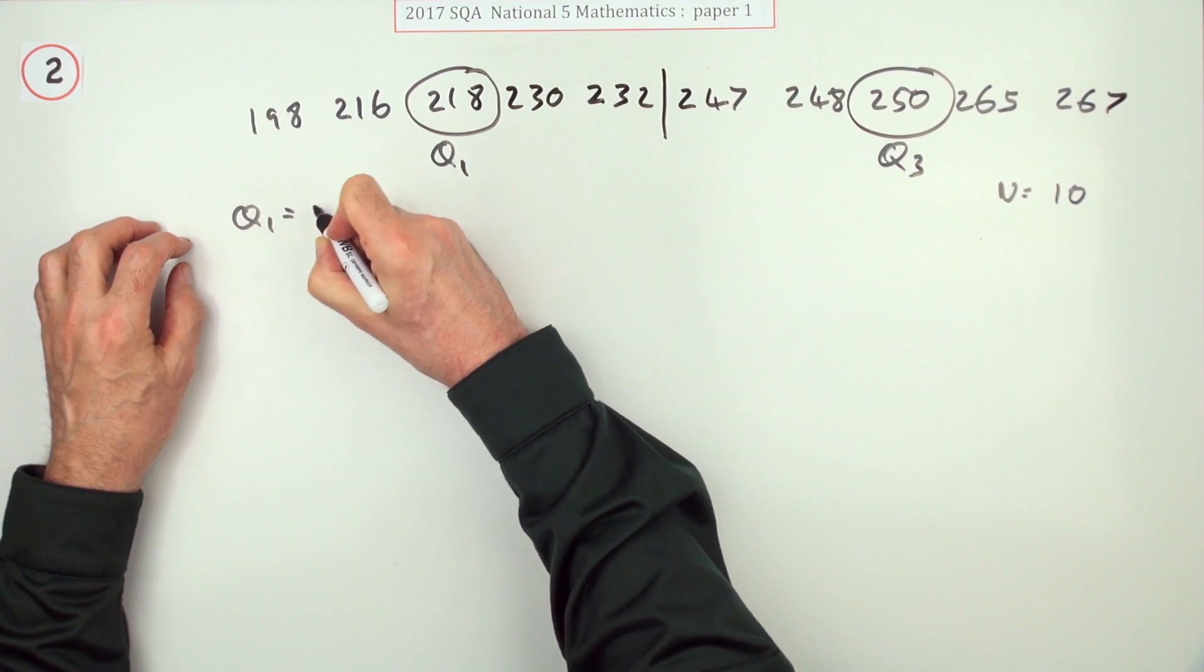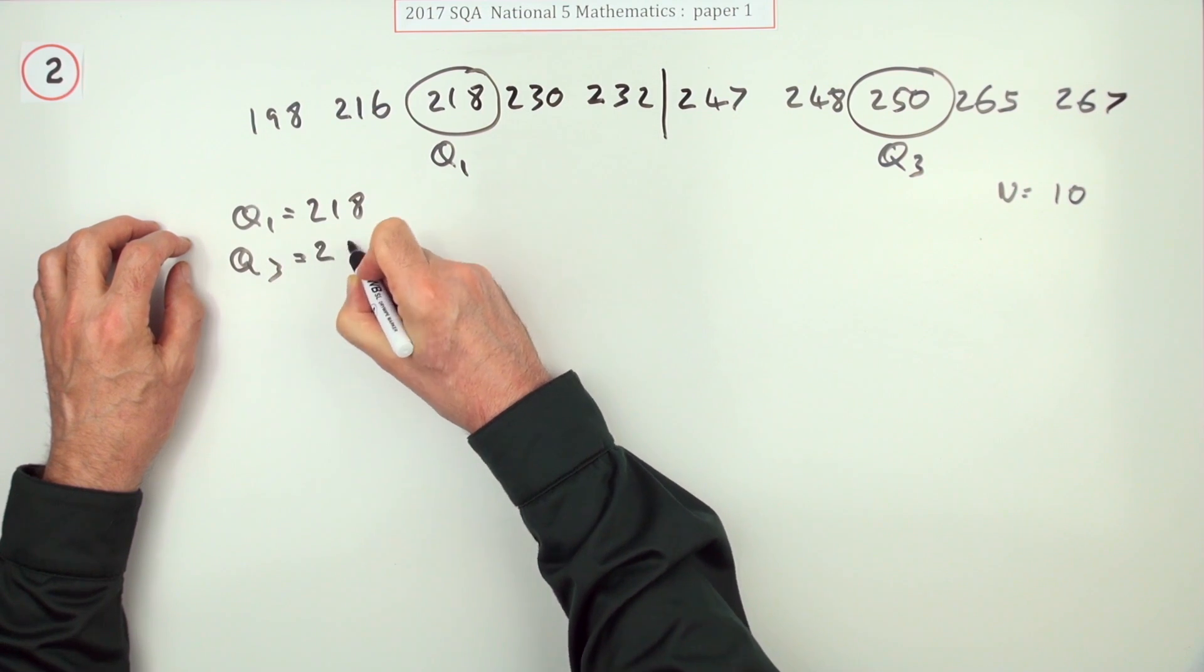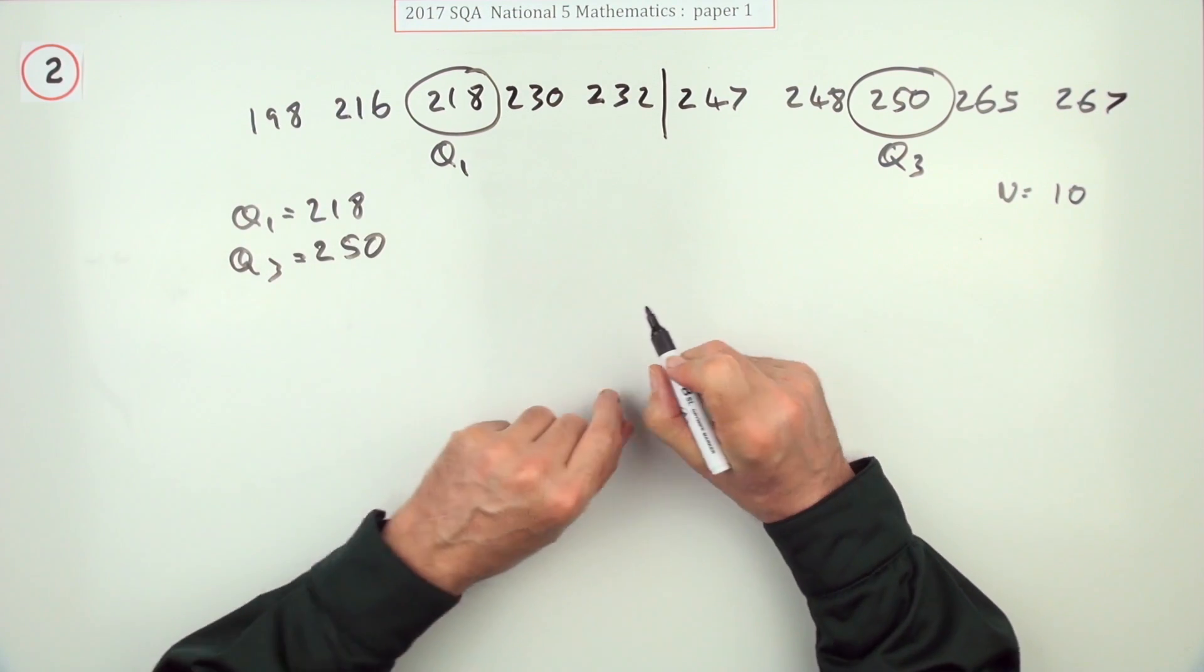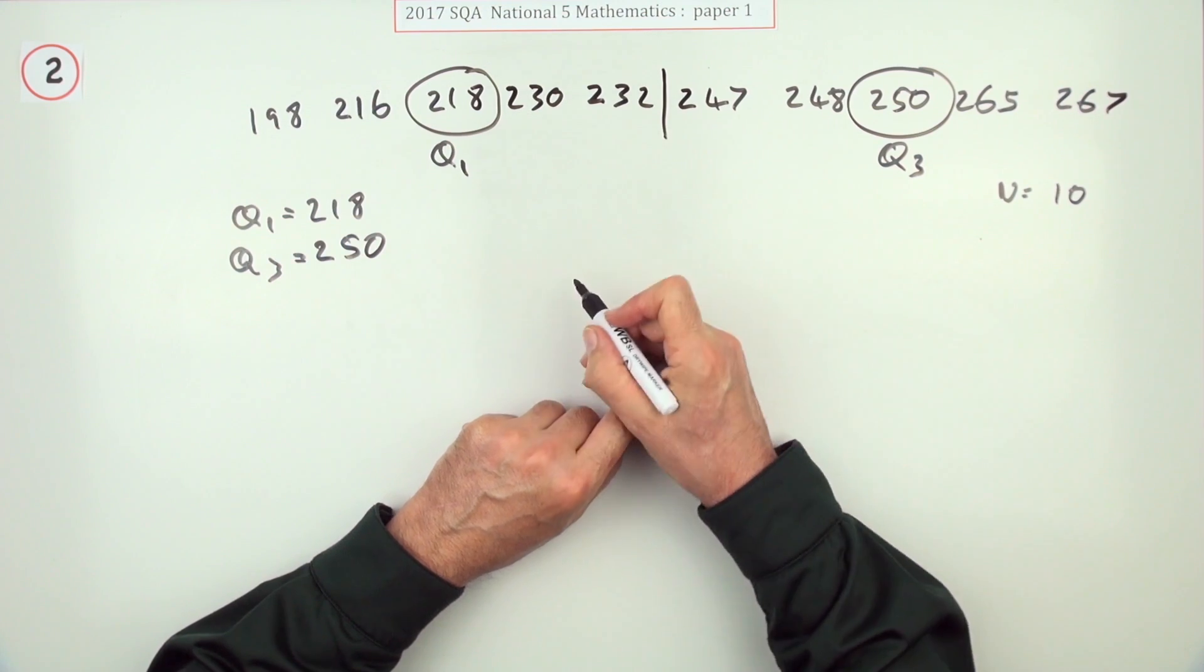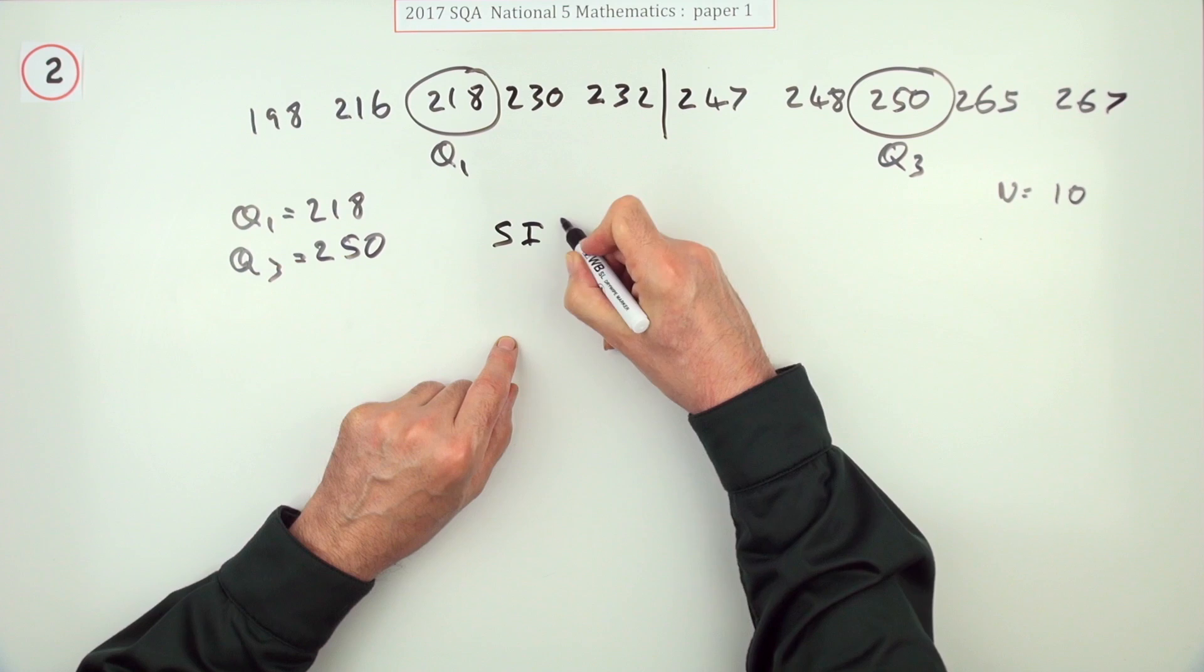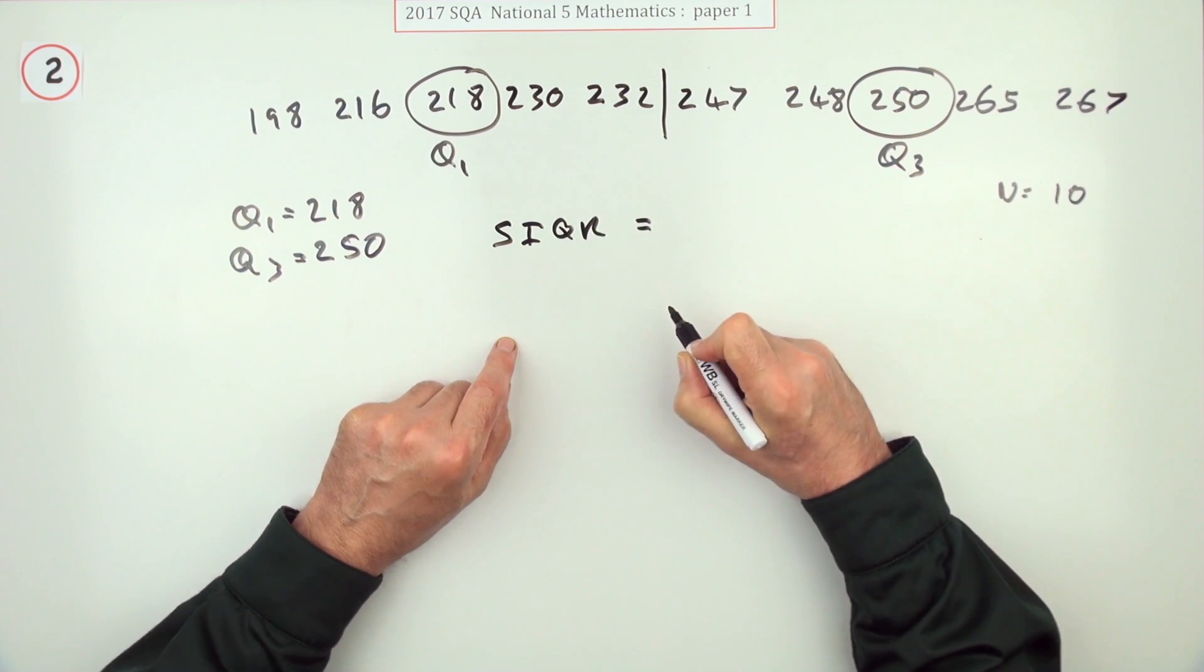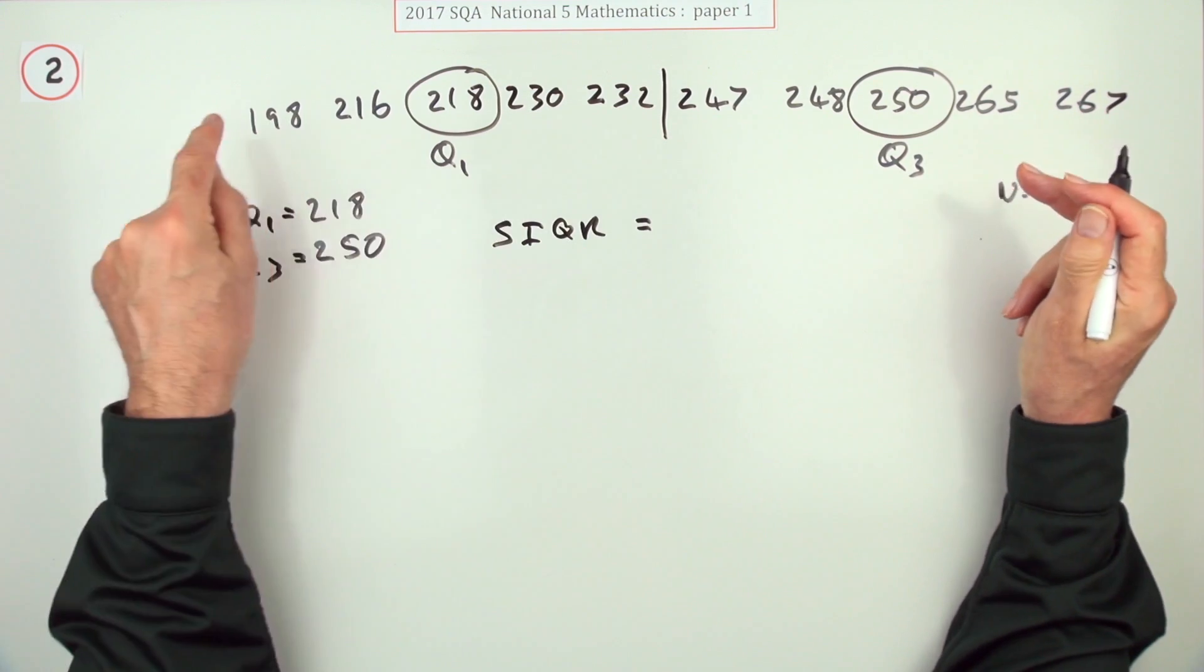So maybe I'll just take a note of that then. Q1 is 218, Q3 is 250. It didn't ask anything about the middle or the median, which would have been halfway between those numbers. But what it did ask you for was the semi-interquartile range. Now, range is the difference between the highest and the lowest—not that highest and lowest, but the highest and lowest quartiles, interquartiles.